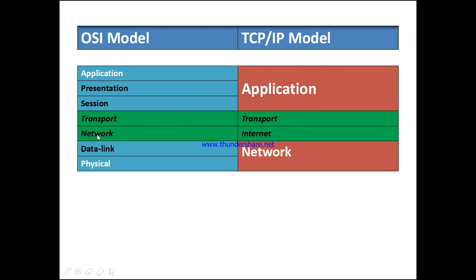The transport layer maps directly. The OSI network layer becomes the TCP/IP internet layer. The OSI data link and physical layers combine into the TCP/IP network access layer.